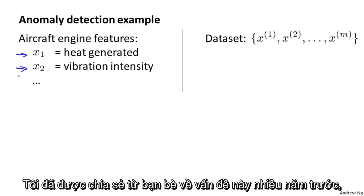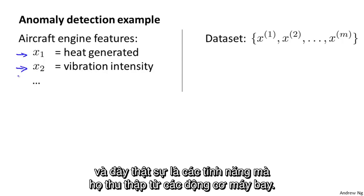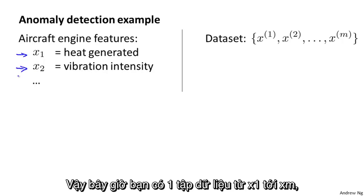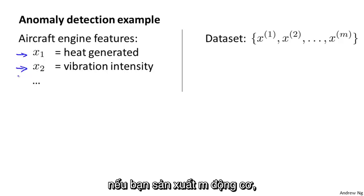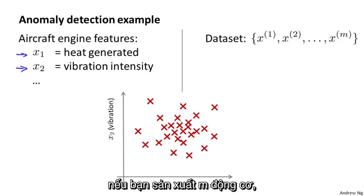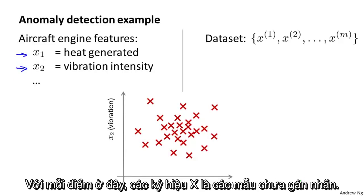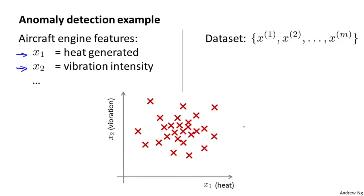I actually have some friends that worked on this problem a long time ago, and these were actually the sorts of features that they were collecting of actual aircraft engines. And so you now have a data set of X1 through XM, if you have manufactured M aircraft engines. And if you plot your data, maybe it looks like this. So each point here, each cross here is one of your unlabeled examples.